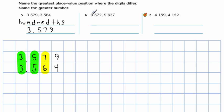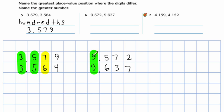Which number is greater? Well, 7 is greater than 6, so 3.579 is the greater number. Moving on to the next one: 9.572. The 9 is in the ones place, so that goes right underneath it — 9.637. Comparing: nines, or the ones, are the same. The tenths — that's where they differ. 6 is greater than 5, so they differ in the tenths place, and the bottom number 9.637 is greater because 6 is greater than 5.